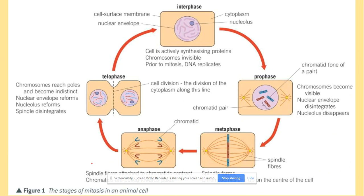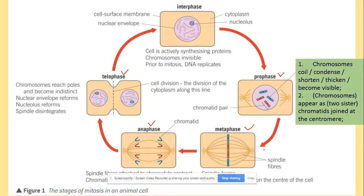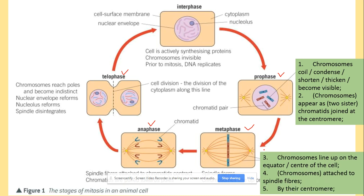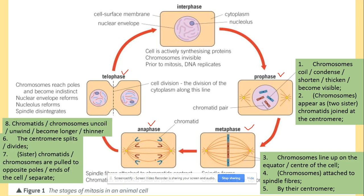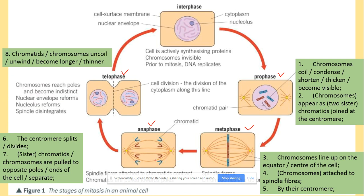Looking at the cell cycle including interphase and mitosis — prophase, metaphase, anaphase and telophase — we focus on chromosomes, not the nuclear envelope. In prophase, chromosomes coil and become condensed, appearing as two sister chromatids joined at the centromere. In metaphase, chromosomes line up at the centre of the cell, attached to spindle fibres by the centromere. In anaphase, the centromere splits and sister chromatids are pulled to opposite poles. In telophase, chromatids — now called chromosomes — uncoil and become longer and thinner. These are the specific terms you need to apply in your exam.